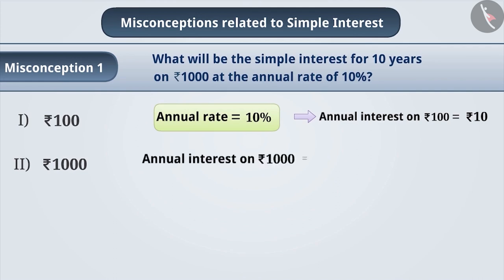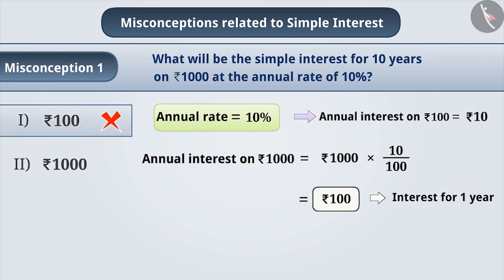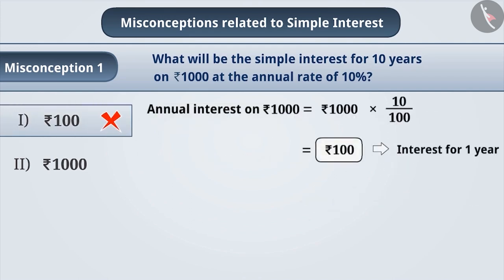Then the annual interest on Rs. 1000 is equal to Rs. 1000 × 10 / 100, which is equal to Rs. 100. Here, students calculate interest for only 1 year. They forget to calculate the interest for 10 years. As a result, they get an incorrect answer, that is option 1.